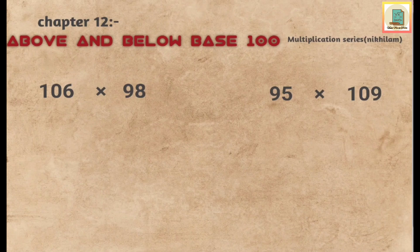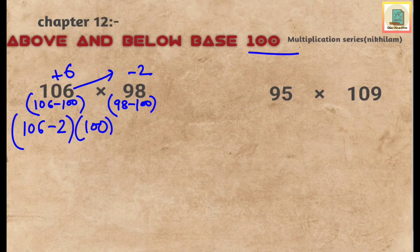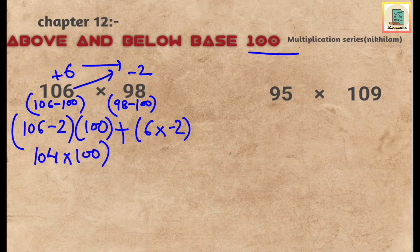The first question is 106 multiplied by 98. First we find the deviation: 106 minus 100 gives plus 6 as deviation, and 98 minus 100 gives minus 2 as deviation. Now, first number plus the second deviation: 106 minus 2 since the deviation is negative. Multiply with the base 100, plus multiply the deviations: 6 multiplied by minus 2 gives minus 12.